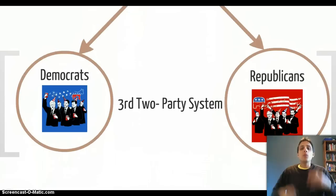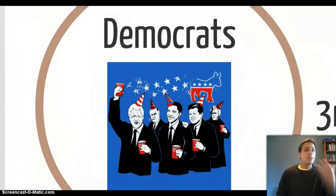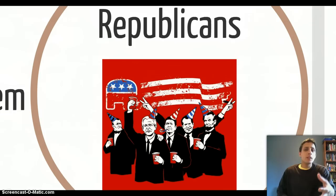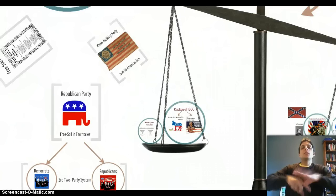This is really the third two-party system, and it's going to stick — this is the two-party system we have today, of the Democrats and Republicans. Some famous Democratic presidents include Bill Clinton, President Obama, JFK, Andrew Jackson, and FDR. Some famous Republican presidents include George Bush, Ronald Reagan, Richard Nixon, and Abraham Lincoln. So this two-party system really stuck with us, and this is the political party system when we step into the election of 1860.